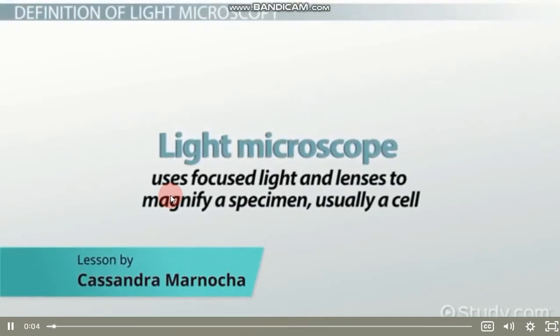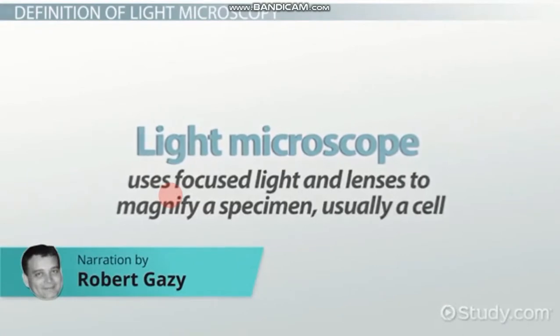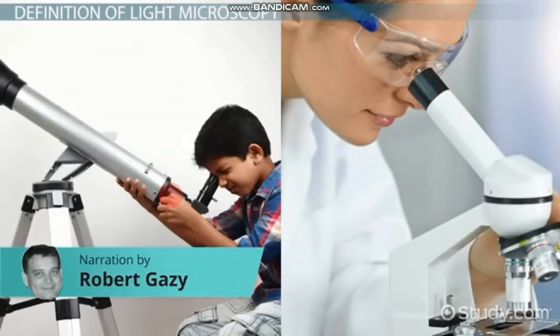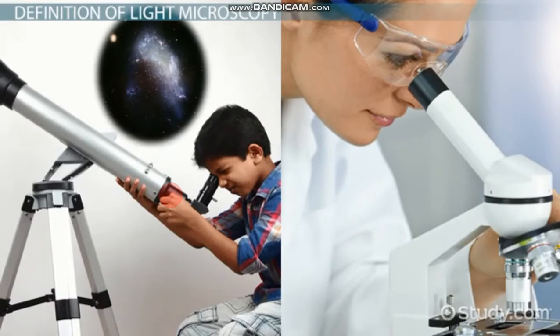A light microscope uses focused light and lenses to magnify a specimen, usually a cell. In this way, a light microscope is much like a telescope, except that instead of the object being very large and very far away, it is very small and very close to the lens.